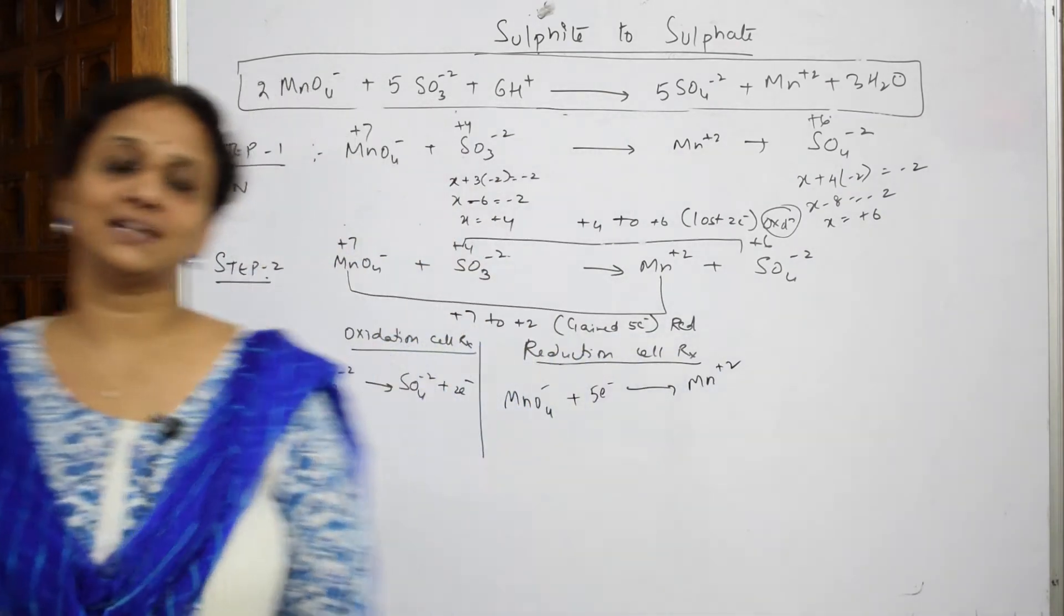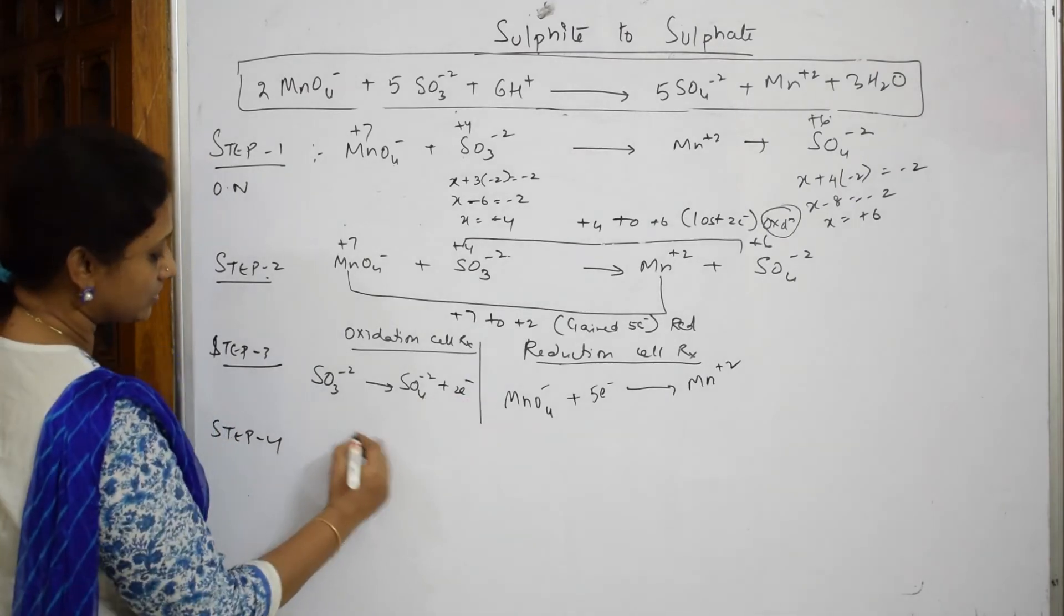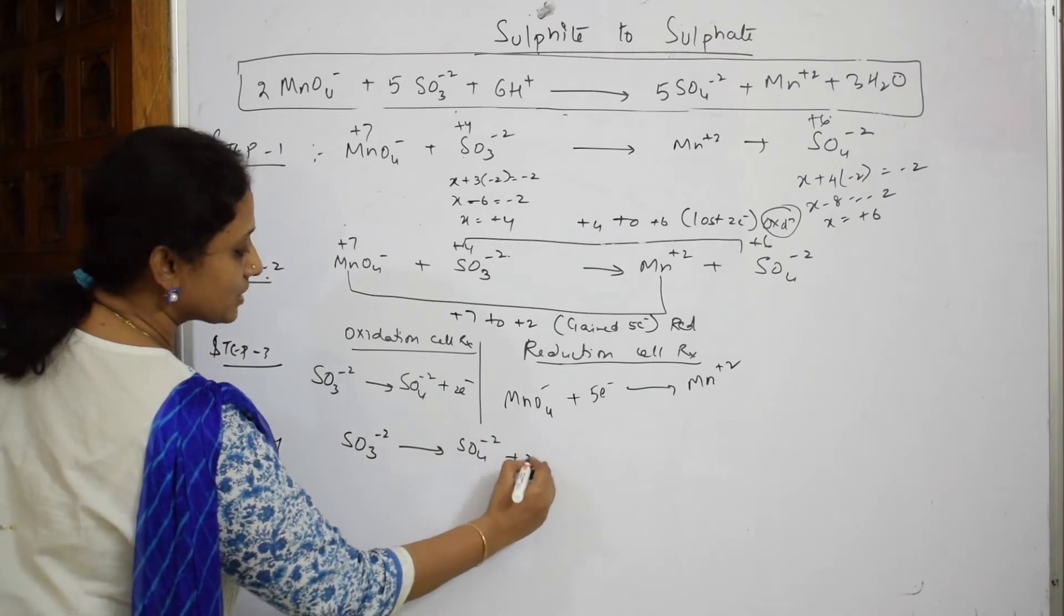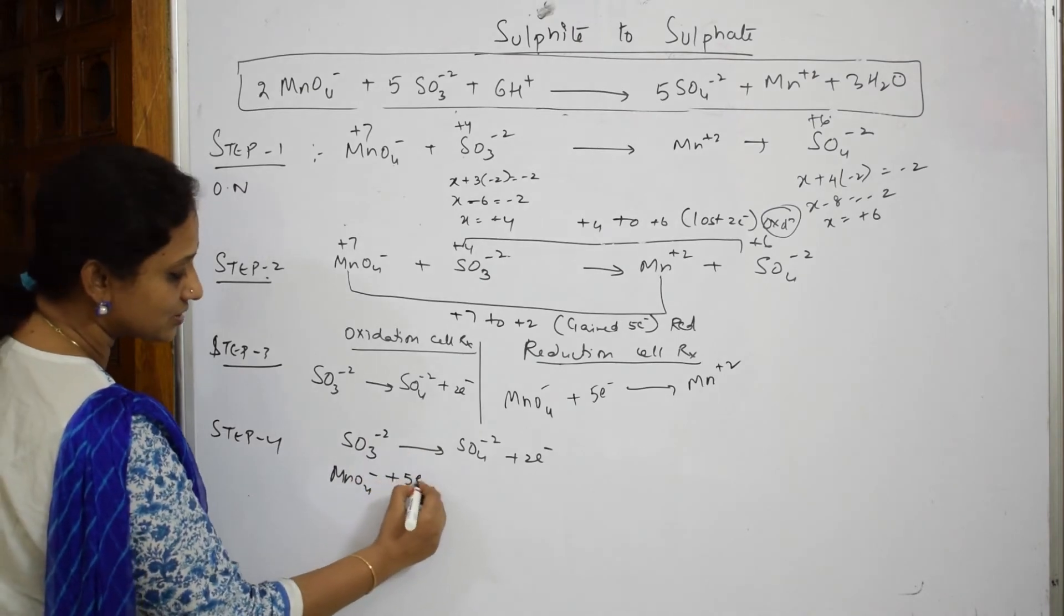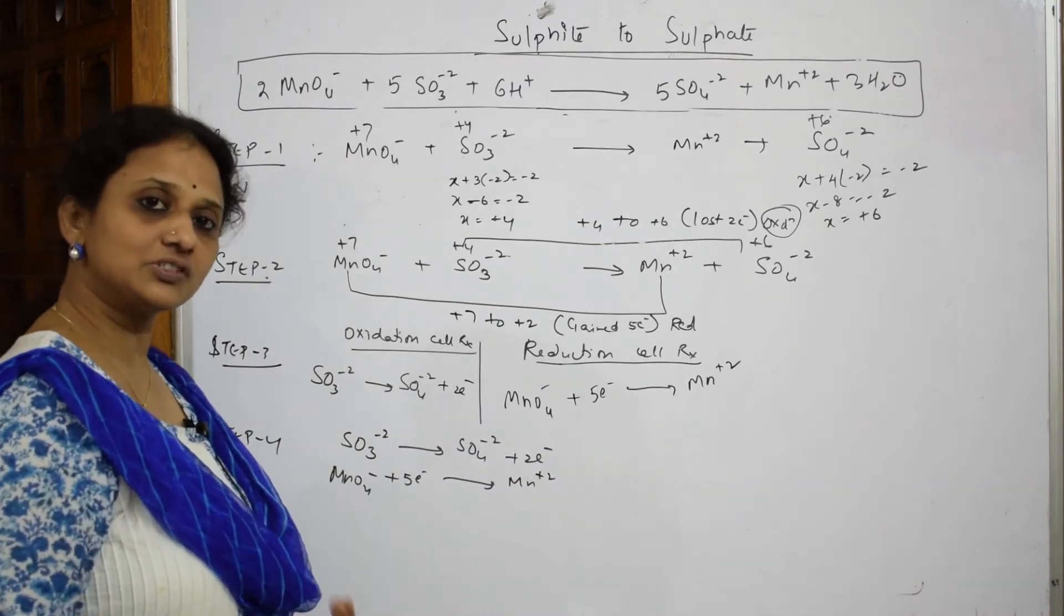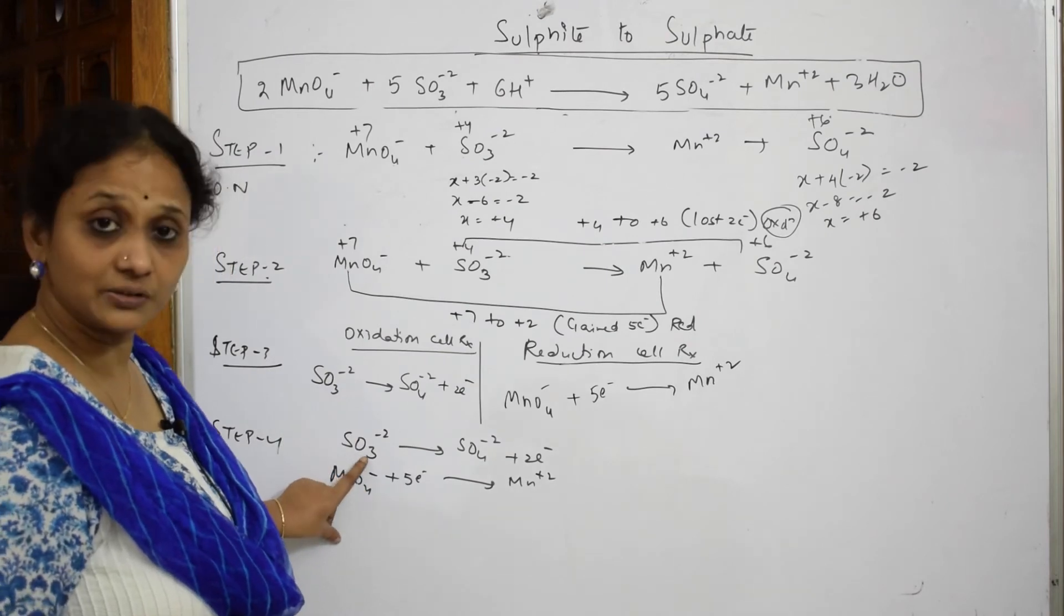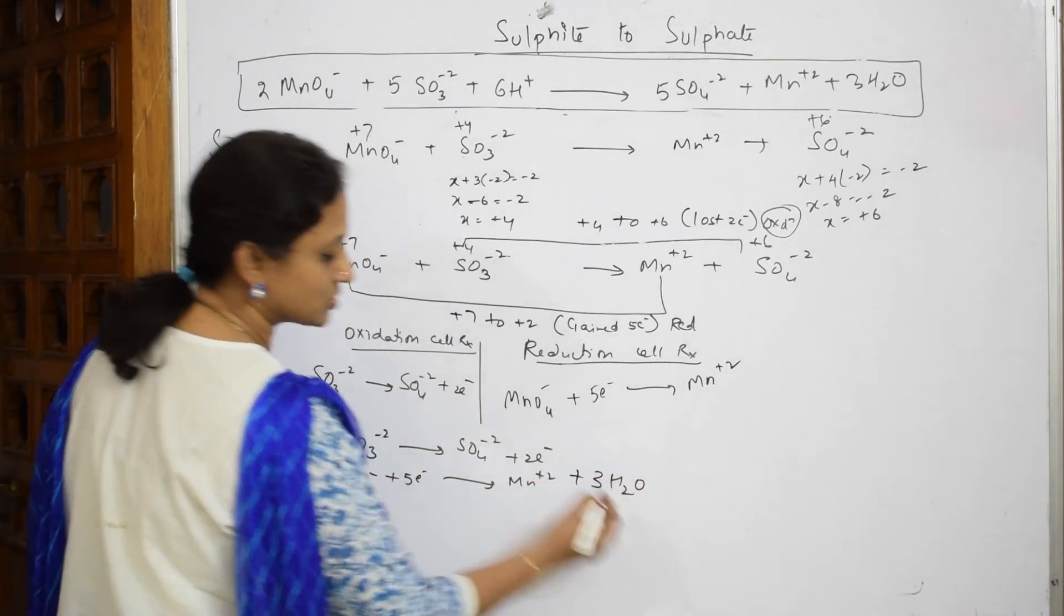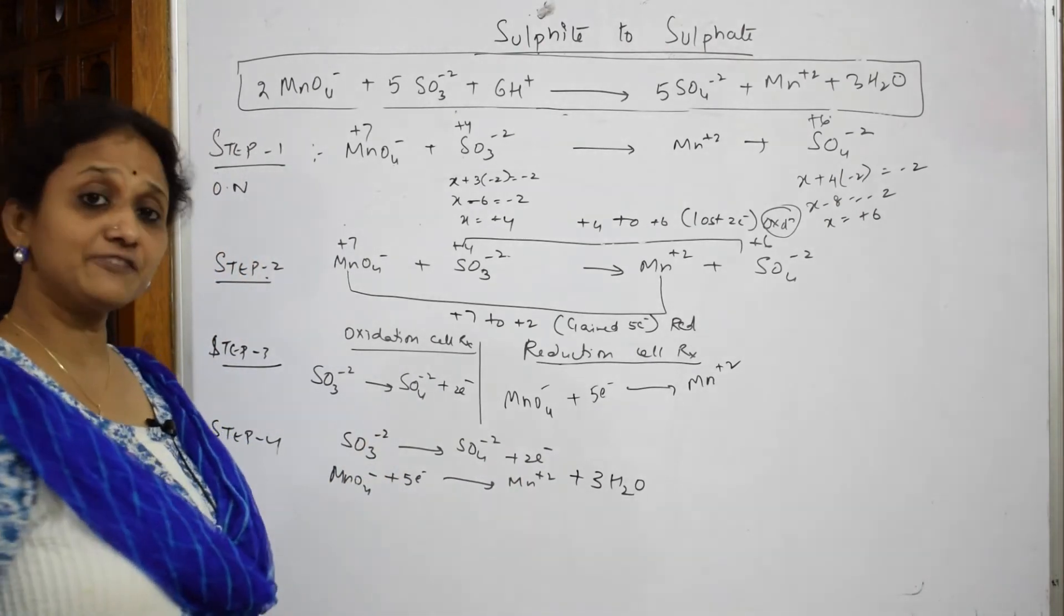After this now you are going to balance oxygen atoms. In step 4 you are going to balance oxygen atoms. Write both reactions together: SO3^2- giving me SO4^2- plus 2 electrons and MnO4^- plus 5 electrons giving me Mn^2+. Now see which side oxygen is less. Here you have 7 oxygen atoms, 4 here 3 here. Here 4. So it is less by 3 oxygen atoms.